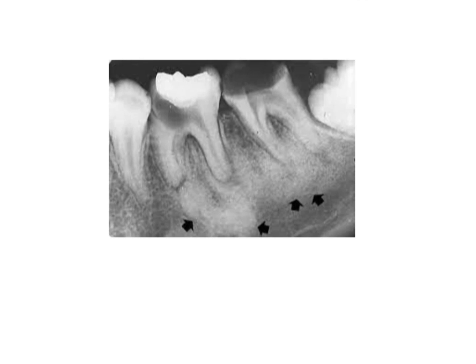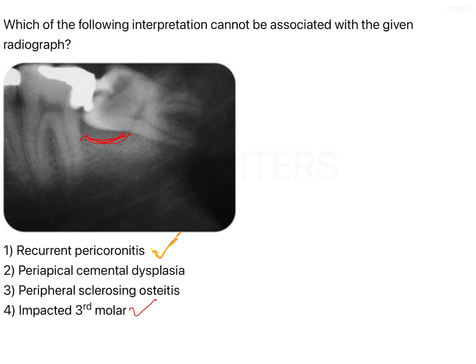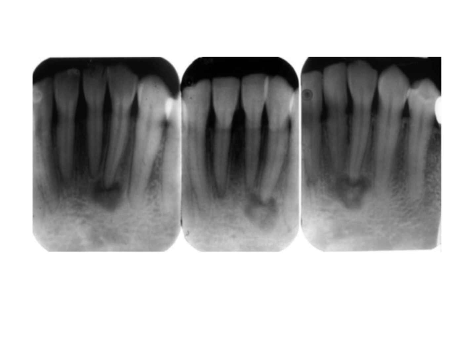In the given radiograph, pericoronitis leads to pocket formation, and if the patient has a good immune system, dense bone formation — condensing osteitis — can occur there. On the other hand, periapical cemental dysplasia is most commonly found in the mandibular anterior region, primarily the mandibular incisors. It is seen more frequently in women between 20 and 40 years of age.